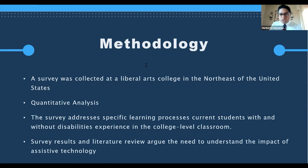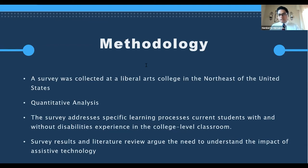Now let's talk about the methodology. The survey addressed specific learning processes that current students with and without disabilities experience in the college-level classroom. It was collected by the NSSE — the National Survey of Student Engagement — which measures the level of student participation at universities and colleges in Canada and the United States as it relates to learning and engagement. The survey was collected at a liberal arts college in the northeast of the U.S., and a quantitative analysis was performed.